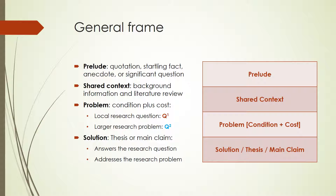Skillful writers build a general frame centered on a problem. First, write a prelude, whether it's a meaningful quotation, a startling fact, illustrative anecdote, or significant question like the research question. Second, provide relevant background information to introduce the topic. This shared context in research writing includes a report about the state of the scholarly conversation focused on the problem. This report is called the literature review, or review of the critical literature.